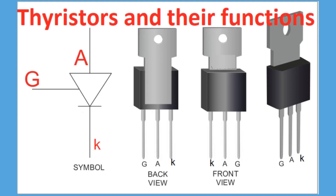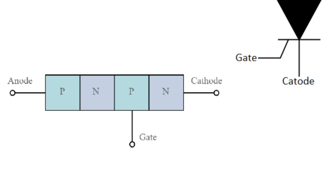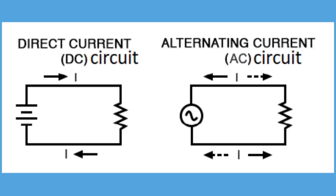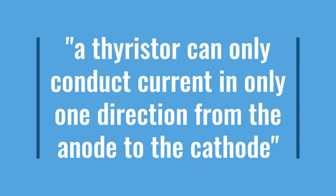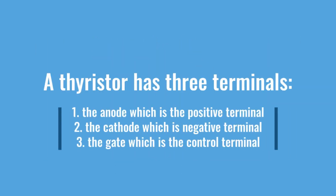From our previous tutorial, we discussed about thyristors and their functions. We all know that a thyristor is a semiconductor device that has four layers of alternating PN-type materials. This thyristor is used as a fast switching device in both DC and AC circuits. An important point is that a thyristor can only conduct current in one direction, from the anode to the cathode, meaning that it is a unidirectional device.